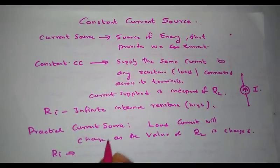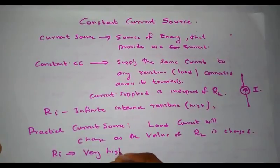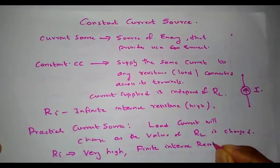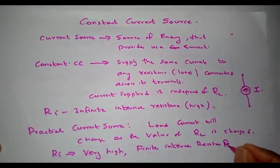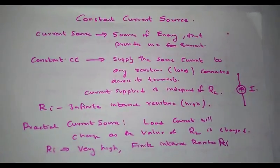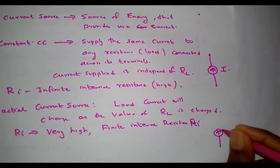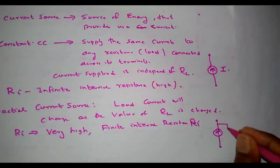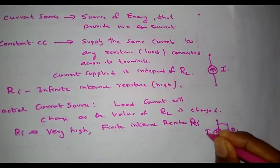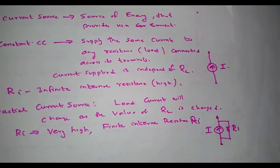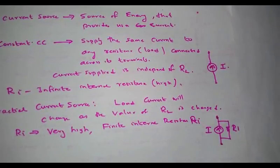A practical current source is considered to have a very high but finite internal resistance Ri. It can be represented by a symbol consisting of a current source I connected in parallel with the internal resistance Ri.